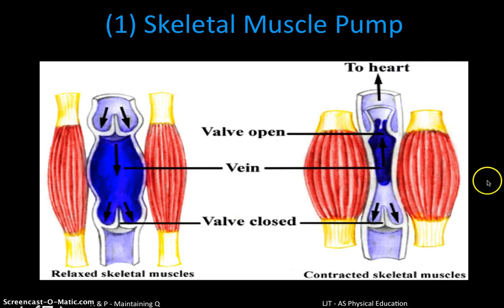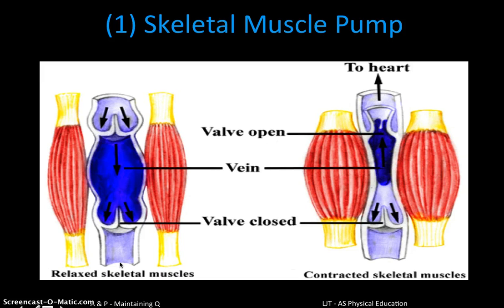Probably the most important mechanism — and the most effective one — is the skeletal muscle pump. It involves our skeletal muscles, such as the gastrocnemius and soleus in the legs, and the veins. Veins are the larger vessels which help return blood to the heart, and they're often situated near or between muscles.